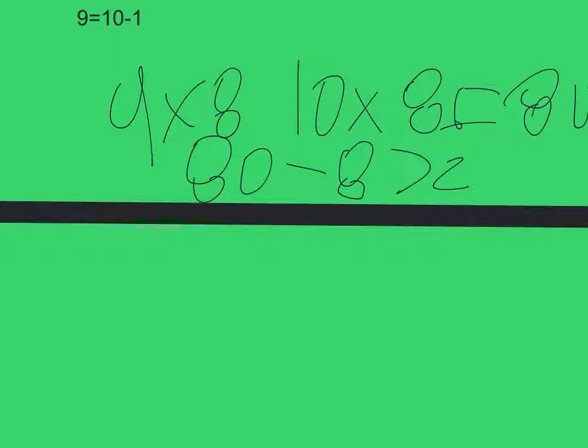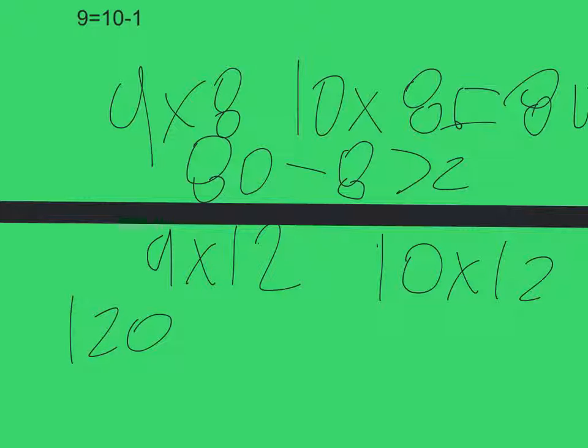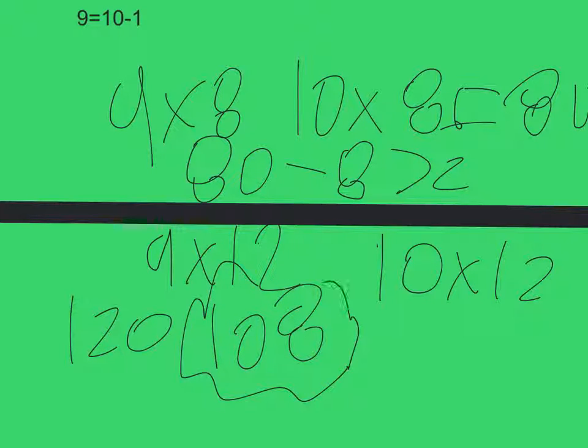Here's another example: nine times twelve. We're going to add twelve to the nine to make ten times twelve, and that's easy—it's one hundred twenty. Minus the twelve we added at the beginning, so it's one hundred eight. And that's how you use the nine equals ten minus one strategy.